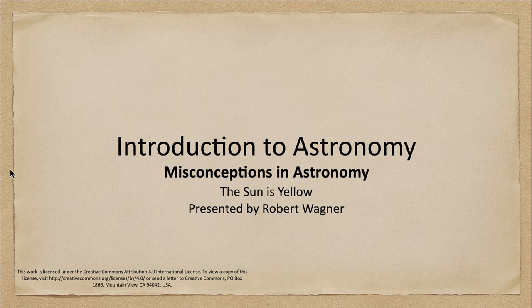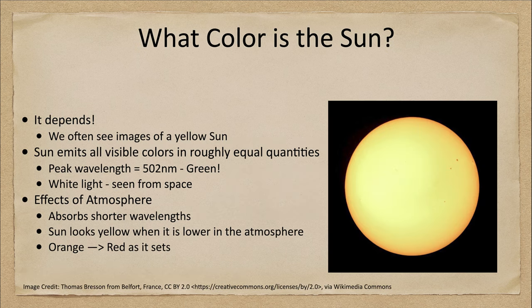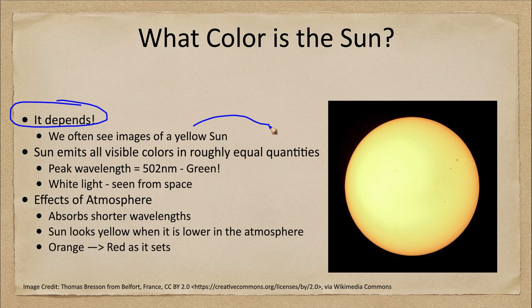What is the color of the Sun? Well, it really depends. We often see images such as this one of a yellow Sun. However, that's not really the case. The Sun actually emits all visible colors in roughly the same amounts — that means all the colors of the rainbow.